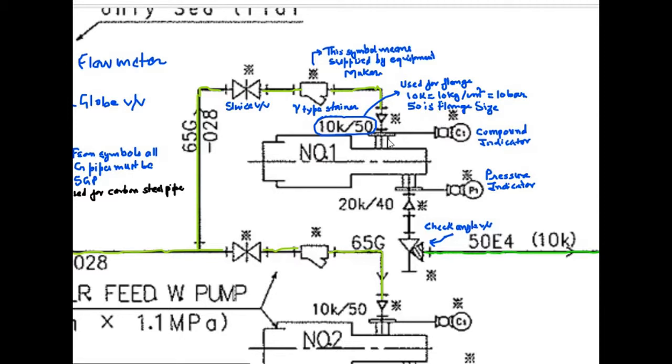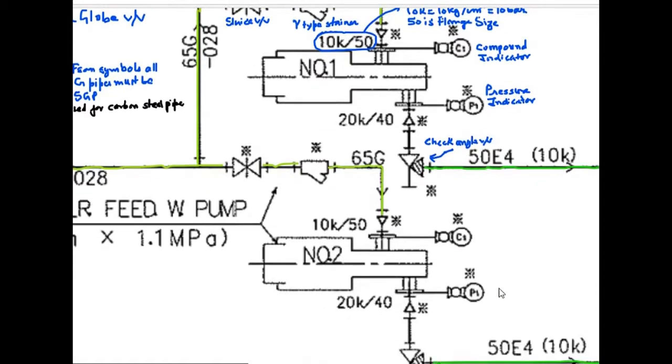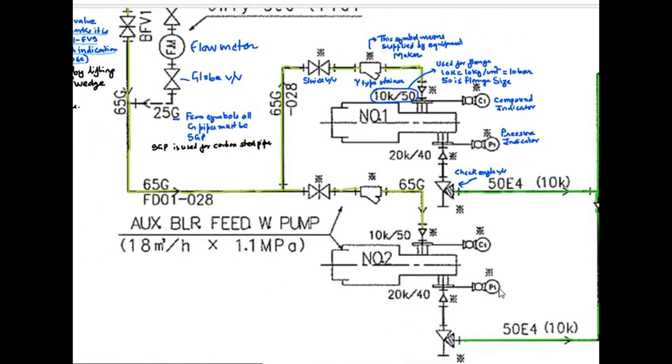On the suction side, we have a compound indicator. CI is the compound indicator symbol. This is number one feed water pump. And on the discharge side, we have pressure indicator. And on the discharge side, we have a check angle valve. It is like a non-return valve which does not allow the fluid to go from one direction to other. Similarly, other pump, the same symbols are there. Both the discharge lines are connected.